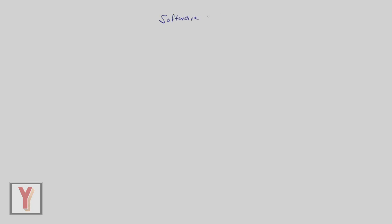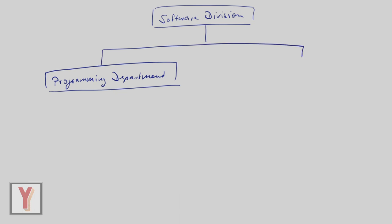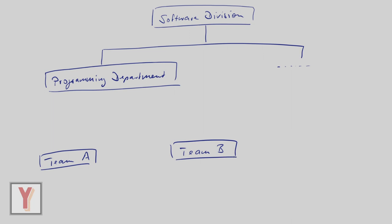At the top we have a software division. This is an org group, and we have a programming department. The programming department belongs to the software division. We can imagine that we have other org groups here. Below the programming department we have two teams: Team A and Team B.